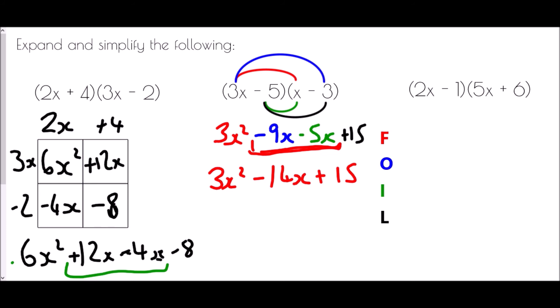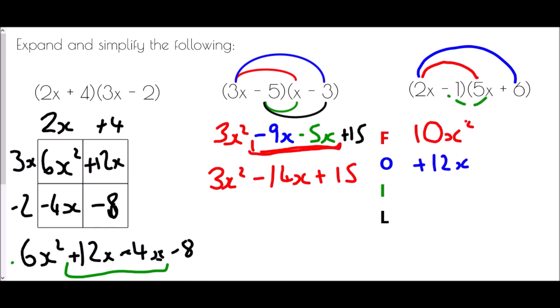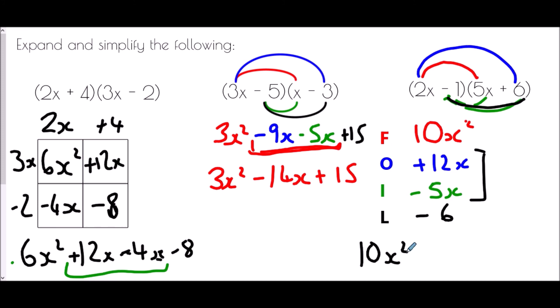Using FOIL for (2x − 1)(5x + 6): First — two x times five x: two times five is ten and x times x is x squared, giving ten x squared. Outside — two x times plus six is plus twelve x. Inside — negative one times positive five x is negative five x. Last — negative one times positive six is negative six. Simplifying: ten x squared, plus twelve x minus five x is plus seven x, minus six.